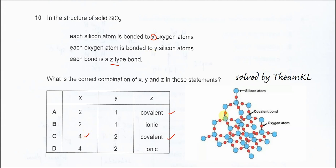And for the red particle which is oxygen, it is now bonded to one, two silicon atoms. So the Y is two. So the answer confirmed is C. That's all, thank you.